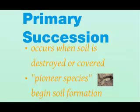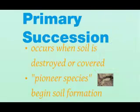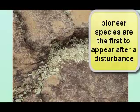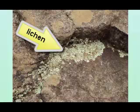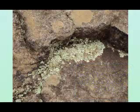Primary succession takes a lot longer than secondary succession because the soil has to rebuild. The very first species to appear after a disturbance are called pioneer species, and they actually begin the formation of soil. What you can see here is a lichen — a symbiotic relationship between algae and a fungus. Lichen can live on rocks, breaking them down and starting the process of soil formation, so you get species like this right after a severe disturbance.